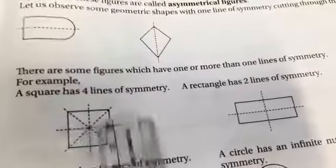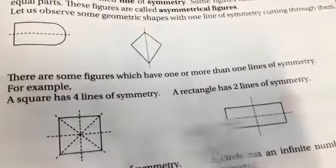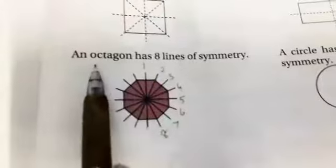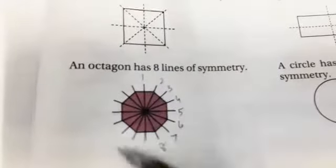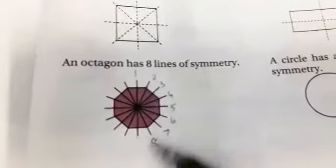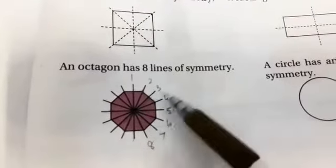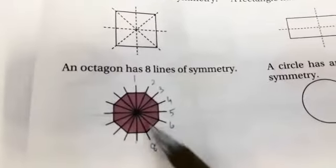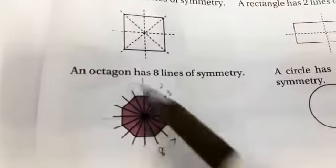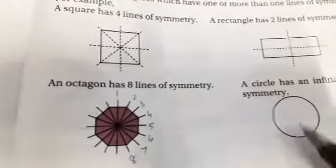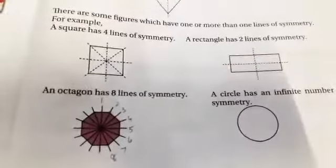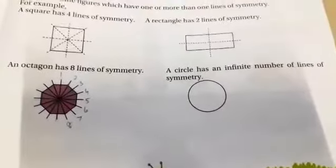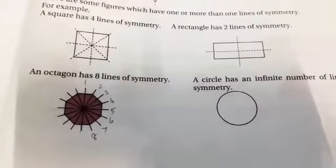Look at the shapes. A square has four lines of symmetry — one, two, three, four. A rectangle has two lines of symmetry. An octagon has eight lines of symmetry — one, two, three, four, five, six, seven, eight. A circle has an infinite number of lines of symmetry.